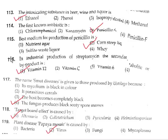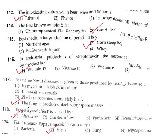Question 116: In industrial production of streptomycin, the secondary metabolite or byproduct is Vitamin B12. Question 117: The smut disease is given to those caused by Ustilago because the fungus produces black sooty spore masses. Question 118: The target board defect is caused by the correct answer, option 1.